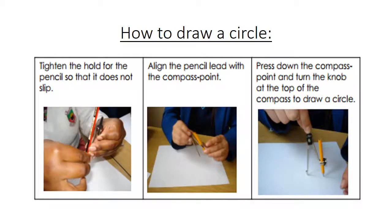How to draw a circle. Now we tighten the hole for the pencil so that it does not slip. Align the pencil lead with the compass point. Press down the compass point and turn the knob at the top of the compass to draw a circle.